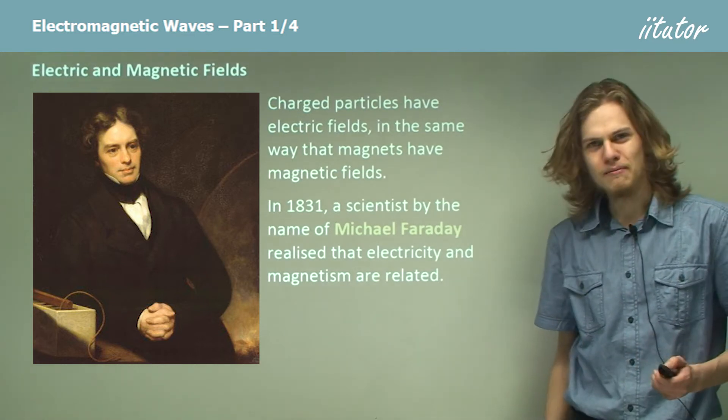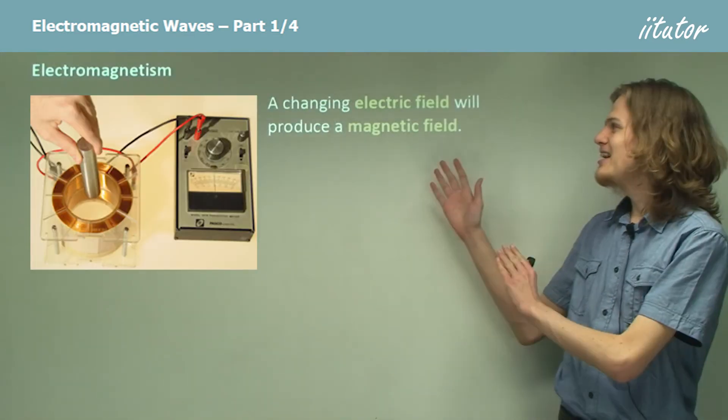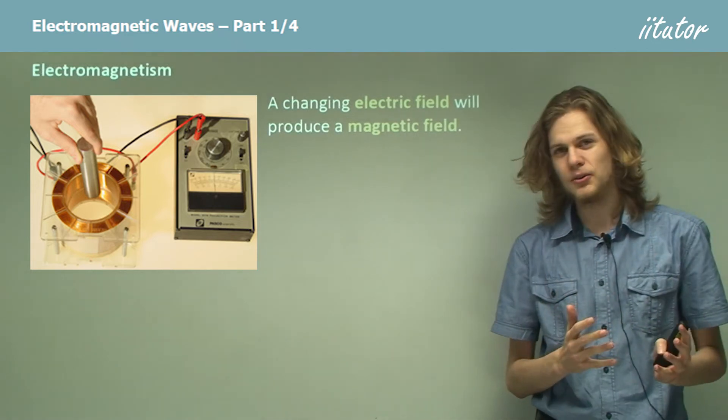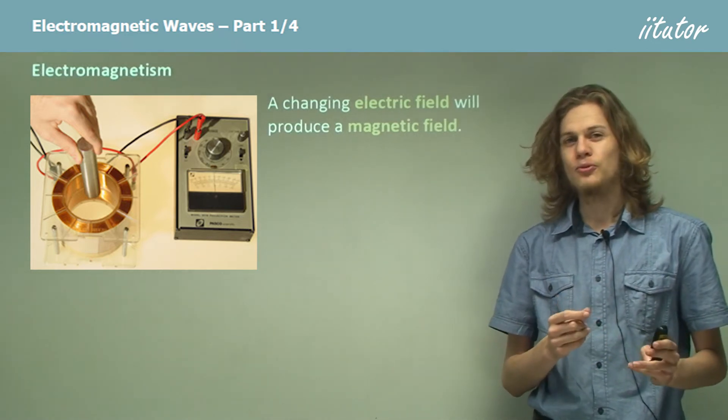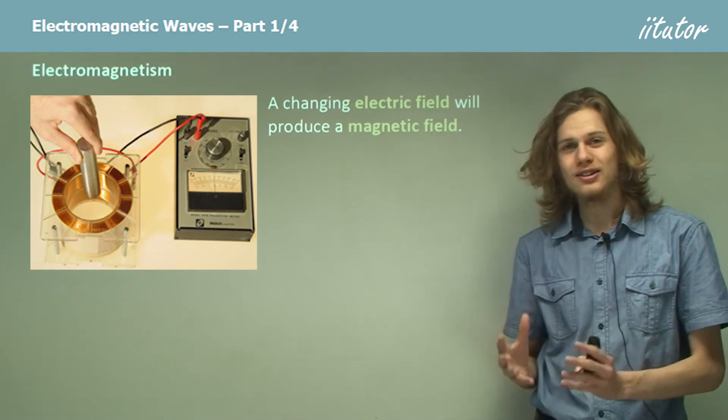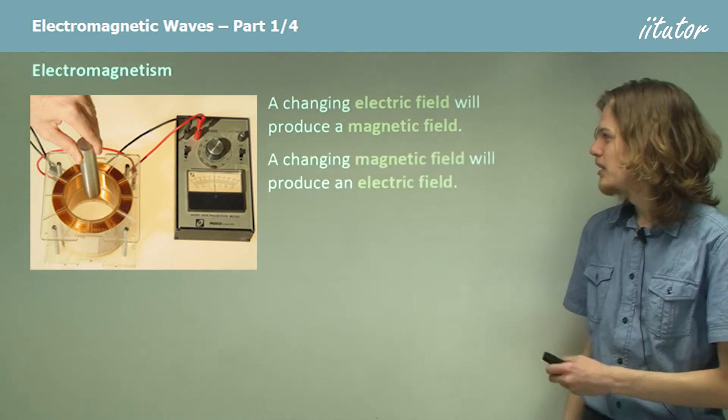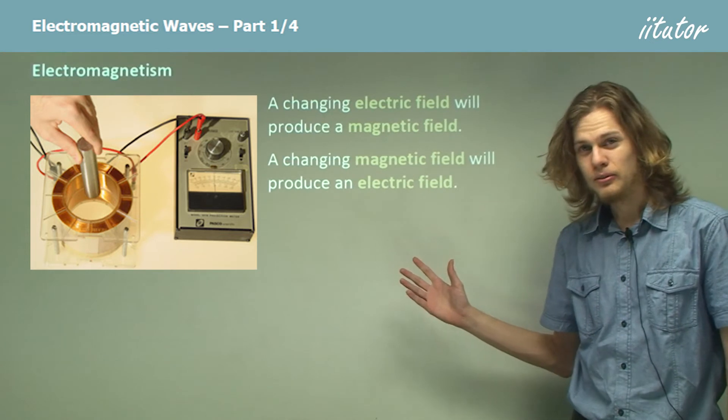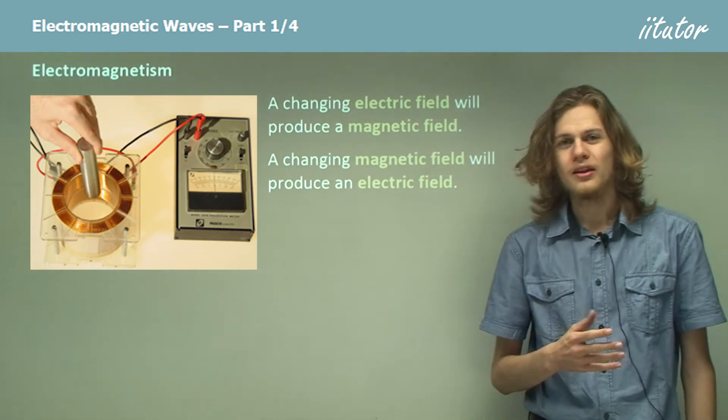So what does this mean? A changing electric field will produce a changing magnetic field. So it means that if you run an electrical wire in just the right way, you can make it behave like a magnet. And the other thing is that a changing magnetic field will create an electric field.